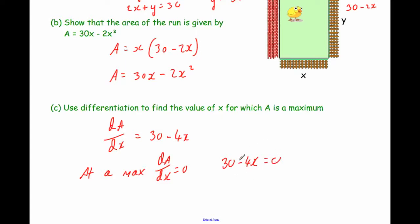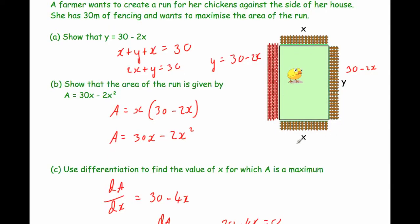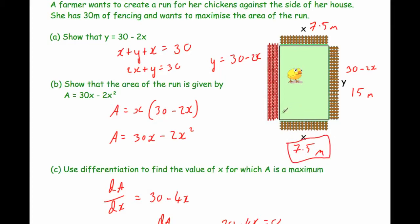Solving: adding 4X to both sides gives 30 equals 4X, and dividing both sides by 4 gives X equals 7.5. So X is 7.5 metres. The other width is also 7.5, making 15 metres total for the two widths. With 30 metres of fencing, the length of the rectangle would be 15 metres. The value of X for which the area is a maximum is 7.5 metres. If asked for the area, we would multiply 15 by 7.5.